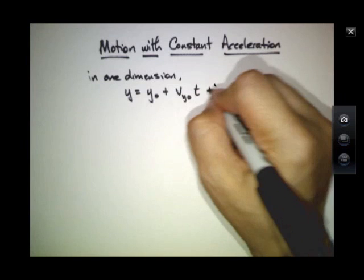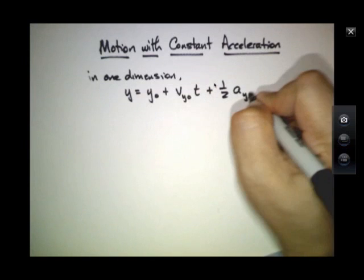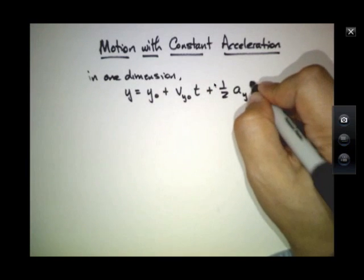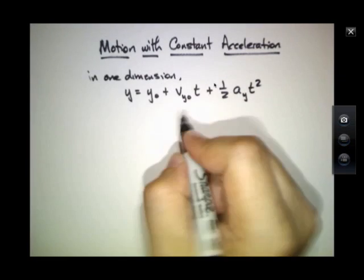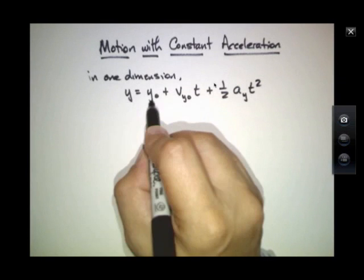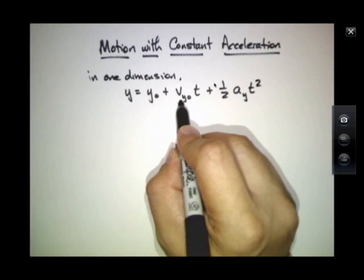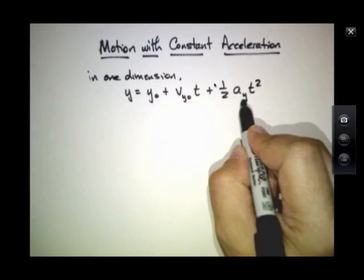plus one-half the acceleration times time squared. I am writing all of this with little subscripts, so this is y, y-naught, notice I'm writing vy-naught, and ay.